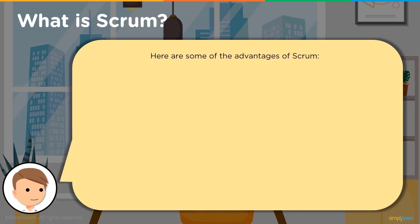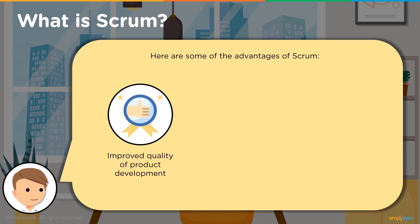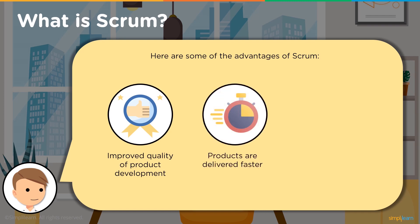Let's talk about some advantages of Scrum. First, it improves the quality of product development. With Scrum, you are able to develop complex products through a less complicated process. Teams are able to constantly make improvements to their product thanks to input and feedback from their customers.